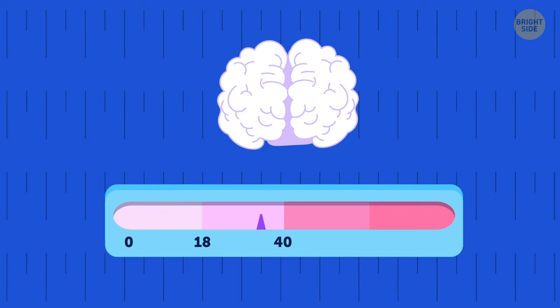The brain grows for the first 18 years of life, then gets 5% smaller every 10 years after the age of 40. That explains a lot, don't you think?